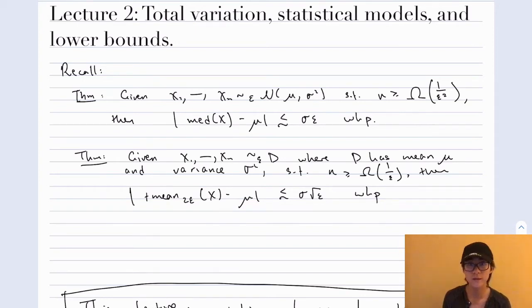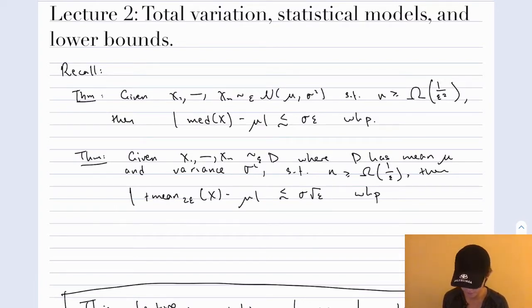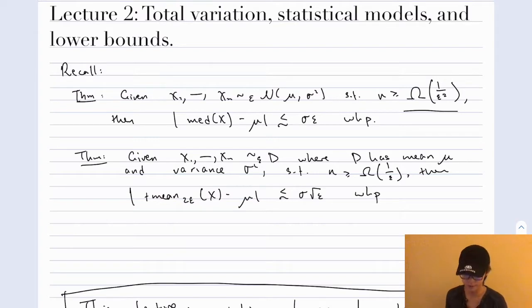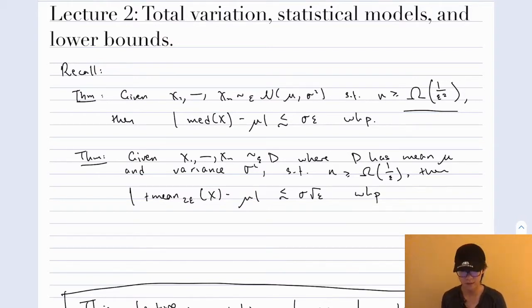First, let's recap what we did in the first lecture. We gave two estimators for robust mean estimation and showed their correctness in two settings. We proved the following two theorems. First, if we were given an epsilon-corrupted set of samples from a Gaussian with mean mu and variance sigma-squared, of size at least omega of 1 over epsilon-squared, then the median of the samples minus the true mean is at most, up to constant, sigma times epsilon with high probability. Technically we only proved this for sigma equal to 1, but things scale naturally with sigma.